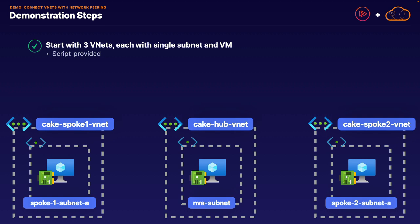We are going to start off with three individual virtual networks named CakeHub VNet, CakeSpoke1 VNet, and CakeSpoke2 VNet, each of which will have a single subnet and a single virtual machine inside of that subnet. Once our environment is built out, we will then go through the process of connecting each of these virtual networks over a network peering connection.